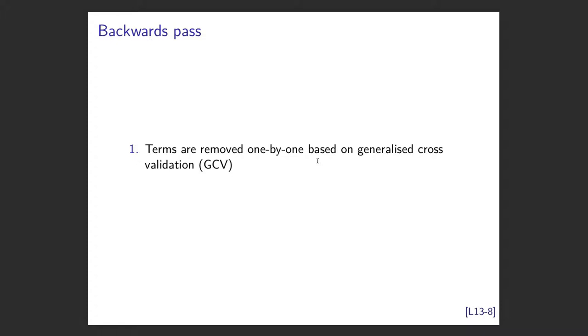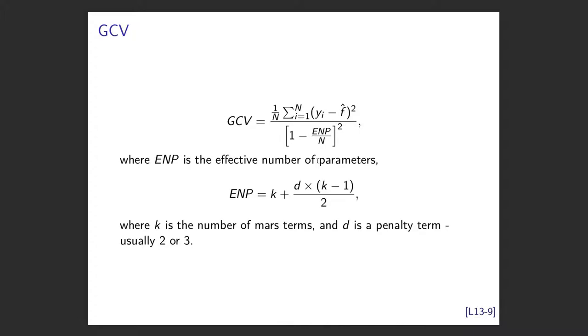Then we now remove the terms one by one based on a generalized cross-validation. So the people invented this method called generalized cross-validation. You've got your observation minus your fitted model, you add that over and take the average, but then you adjust by what they call the effective number of parameters, which is your number of MARS terms K plus this penalty term. When I checked the literature, they just said the penalty term is usually two or three. So you've fitted this big huge model, you've overfitted, and then you're using cross-validation to basically throw terms out. So you get the smallest model that gives you good prediction.